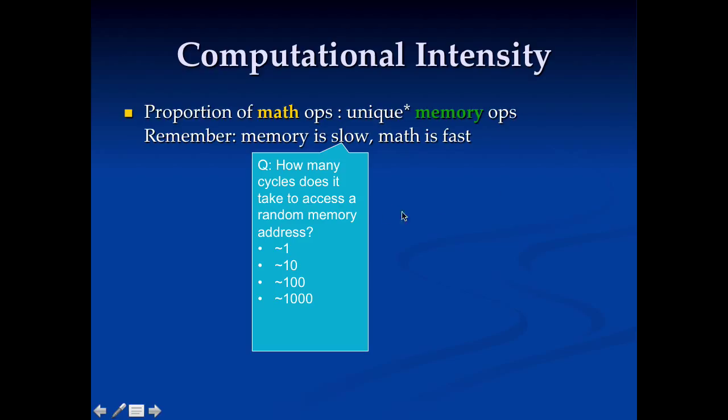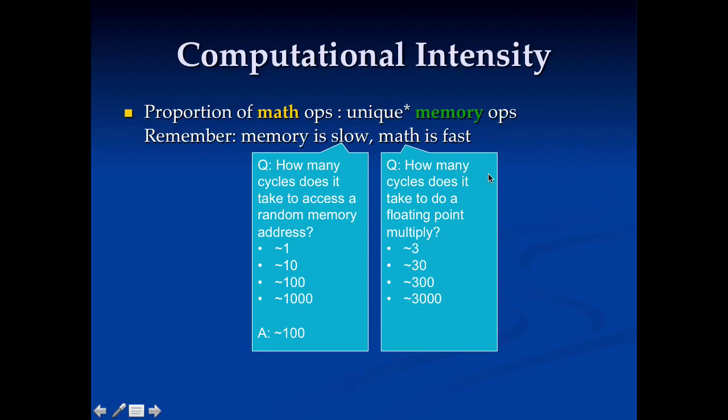So how slow is memory? Well, it turns out that memory takes about 100 cycles to access on a processor, CPU, and up to 500 cycles on a GPU. So on the order of 100 cycles to access memory.